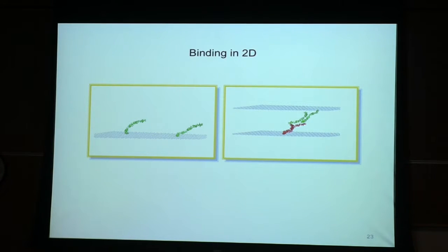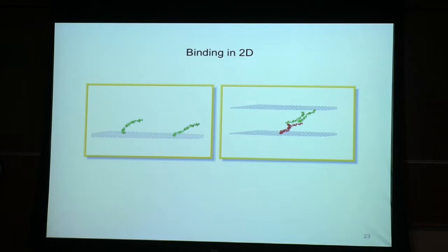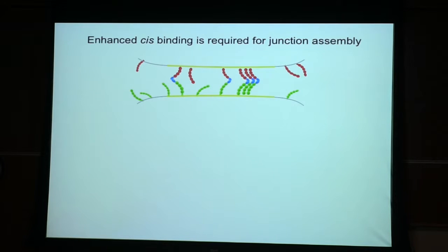This leads to the question: can these proteins form a two-dimensional assembly on their own of the sort I showed you on the cell surface? There are all kinds of theoretical issues here, but the basic point is that when we calculate or measure binding affinities in solution, these proteins are moving in three dimensions. When proteins interact on cell surfaces, they move in quasi-two dimensions. So the affinities we measure in three dimensions must somehow be related to affinities in two dimensions, and we have a theoretical framework to make that transformation.